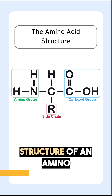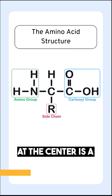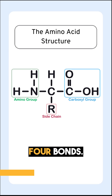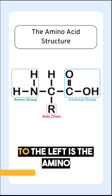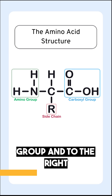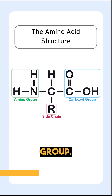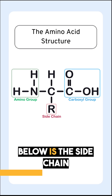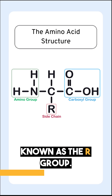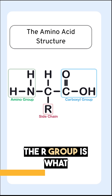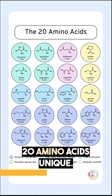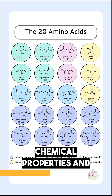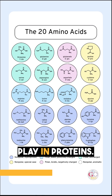This is the general structure of an amino acid. At the center is a carbon atom called the alpha carbon, which forms four bonds. To the left is the amino group and to the right is the carboxylic acid group. Above the alpha carbon is the hydrogen atom and below is the side chain known as the R group. The R group is what makes each of the 20 amino acids unique — it determines their chemical properties and the specific roles they play in proteins.